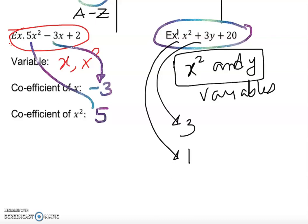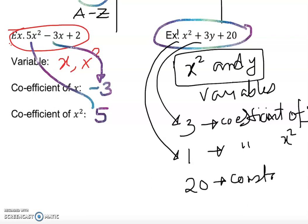So 1, so this is the coefficient of y, coefficient of x square. Now the constant, which is 20, is the constant. So I hope you have a clear idea what is constant, what is coefficient, and what is variable.